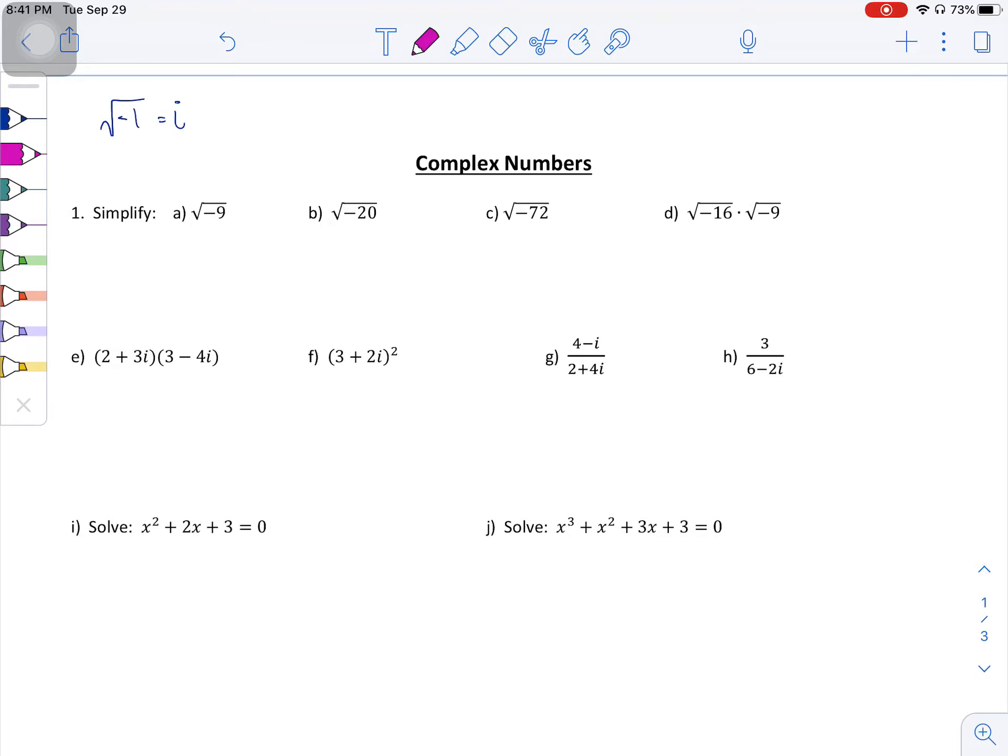However, there are some other values that we want to pay attention to. When we talk about i squared, and we want to know what that is equal to, well, if i is the square root of negative one and we square that, square and square root cancel each other out. So i squared is equal to negative one. That is highly important to know.